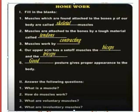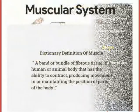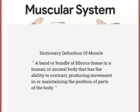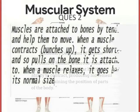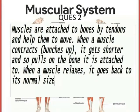What is a muscle? A band or bundle of fibrous tissue in a human or animal body that has the ability to contract, producing movement or maintaining the position of parts of the body. How do muscles work? Muscles are attached to bones by tendons and help them to move. When the muscle contracts, it gets shorter, pulling the attached bones. When the muscle relaxes, it goes back to its normal size.